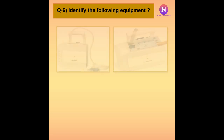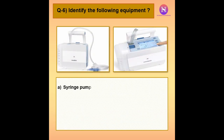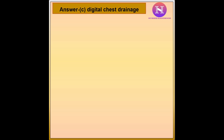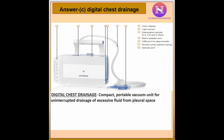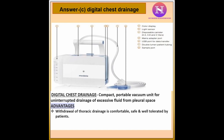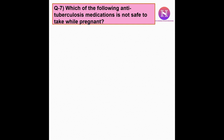Question 6: Identify the following equipment. a. Syringe pump. b. Infusion pump. c. Digital chest drainage. d. BiPAP. The correct answer is c — digital chest drainage. It is a compact, portable vacuum unit for uninterrupted drainage of excessive fluid from the pleural space. Its advantage is that thoracic drainage is comfortable, safe, and well tolerated by patients, and it reduces hospital stay.